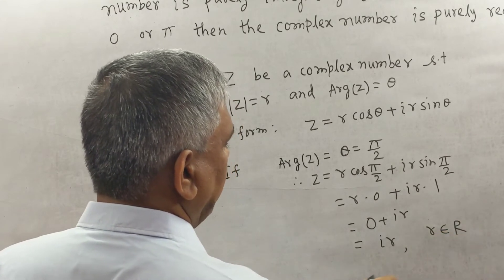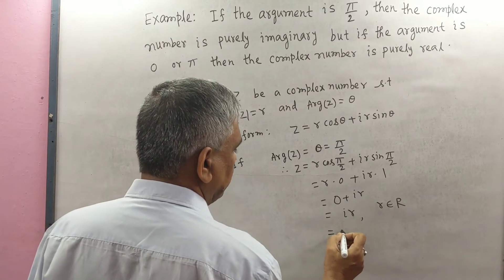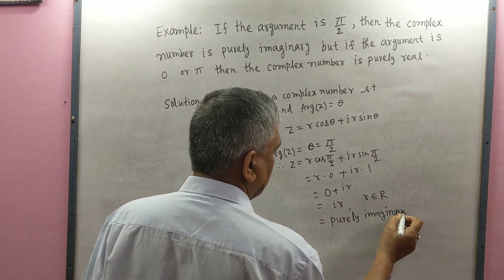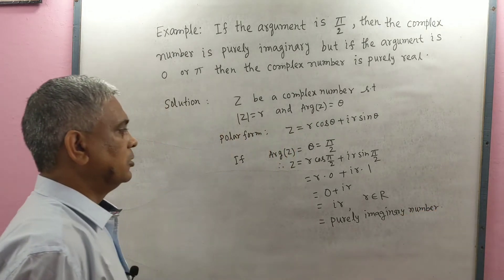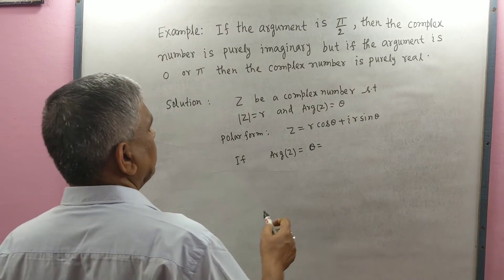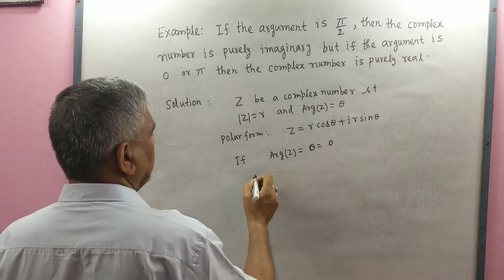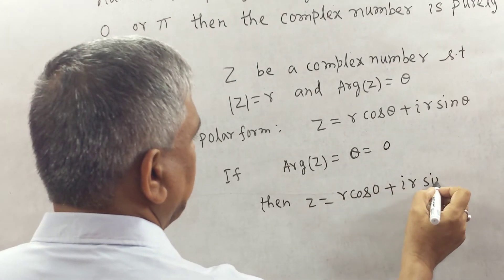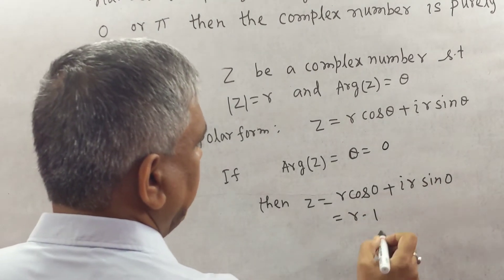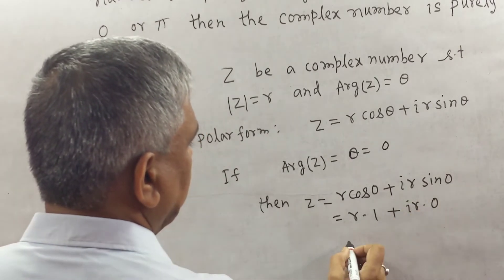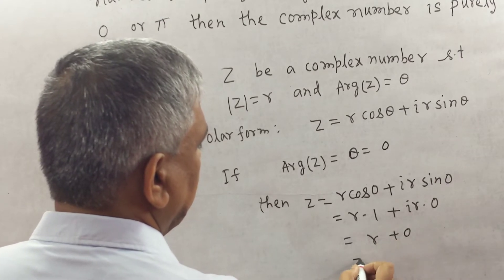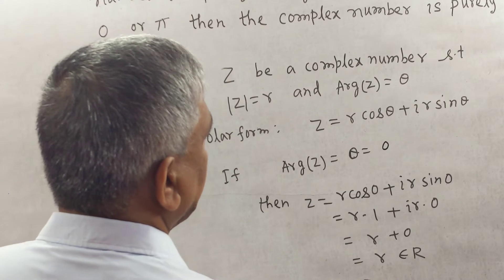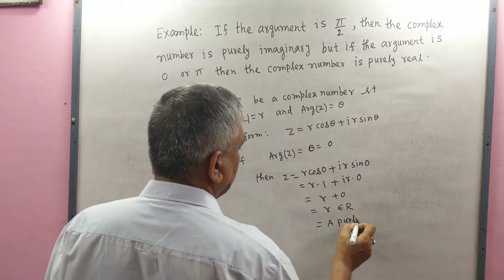Since r is a real number and i is the imaginary unit, ir is a purely imaginary number. If argument θ = 0, then z = r·cos 0 + i·r·sin 0 = r·1 + i·r·0 = r, which belongs to the real numbers, so it is a purely real number.